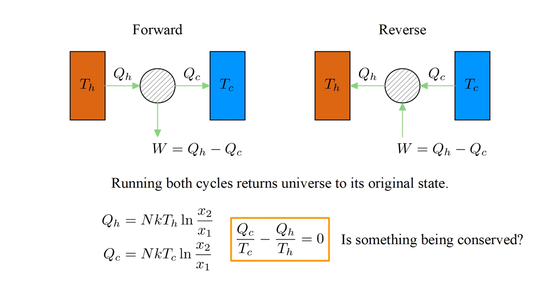This result hints that something corresponding to transferred heat divided by temperature may be conserved in the Carnot cycle. This might be telling us, that an amount of something equal to Q cold over T cold, is delivered to the cold reservoir, and this is equal to the same amount of something, Q hot over T hot, extracted from the hot reservoir. And, maybe, this conservation is characteristic of a reversible process.